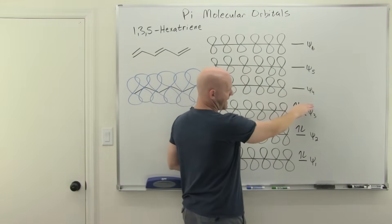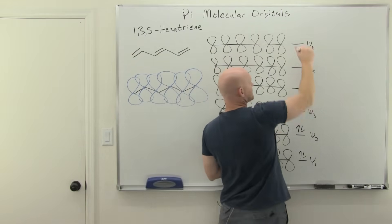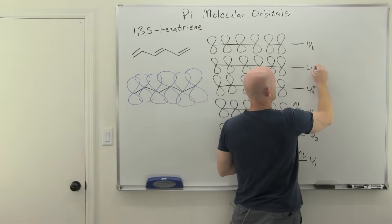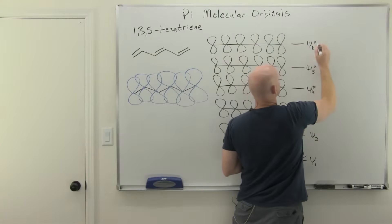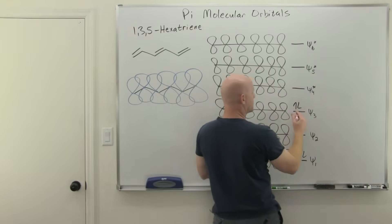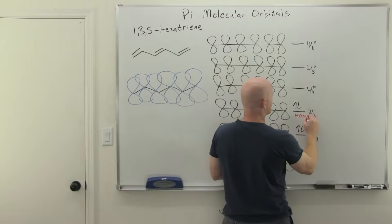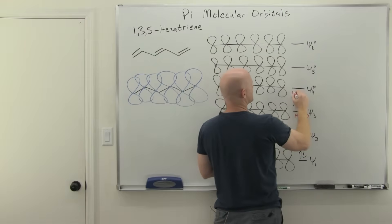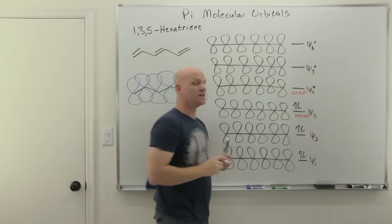We should also note that the lower half, psi 1, 2, and 3 are bonding. The upper half, psi 4, 5, and 6 are antibonding. And we'll designate them with an asterisk. And here we can see that our highest occupied molecular orbital is going to be psi 3, the HOMO, and psi 4 star, the lowest unoccupied molecular orbital, the LUMO.